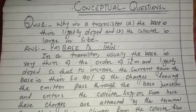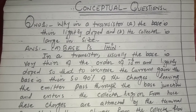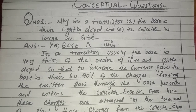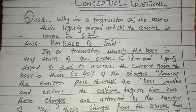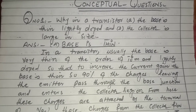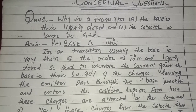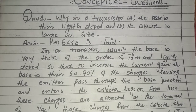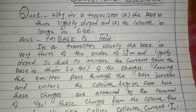Question number one hai, important imtiyan ke lihaaz se: why in a transistor the base is thin and lightly doped, and the collector is large in size? Transistor is a combination of two words: transfer and resistor. Transfer means the flow of charge and resistor means to resist the flow of charge.